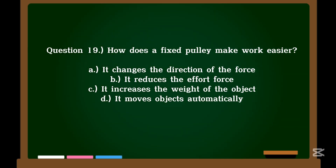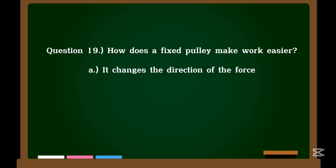Question 19. How does a fixed pulley make work easier? A. It changes the direction of the force. B. It reduces the effort force. C. It increases the weight of the object. D. It moves objects automatically. Correct answer: A. It changes the direction of the force.